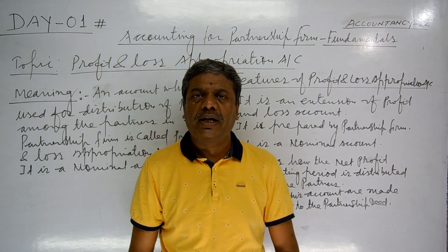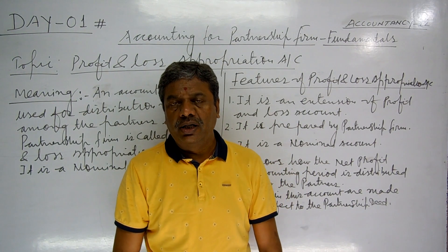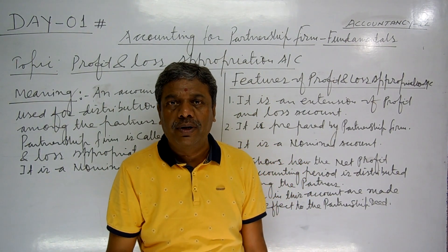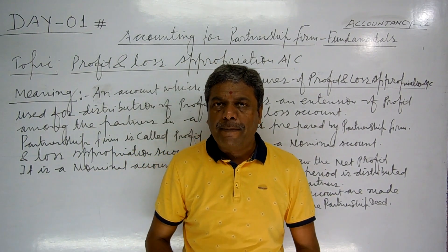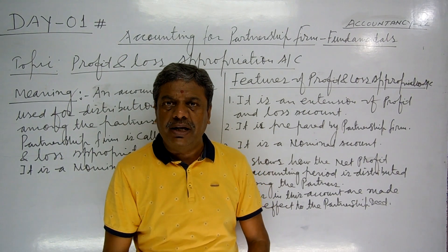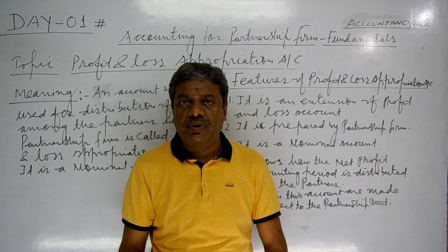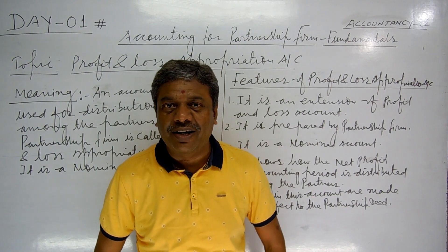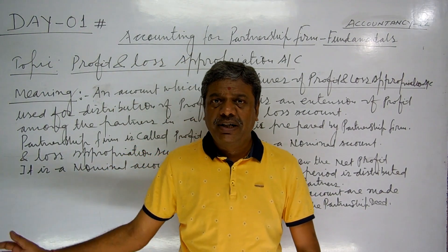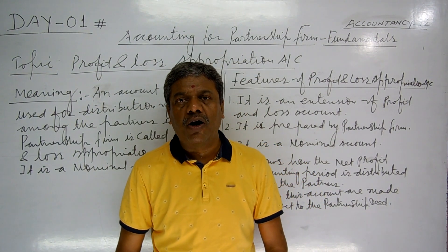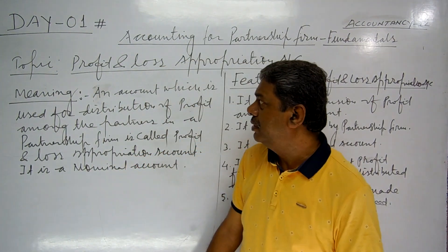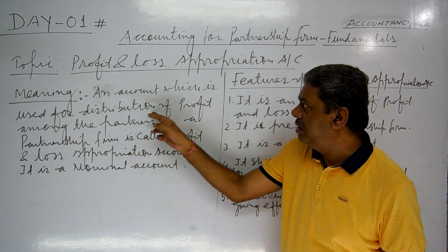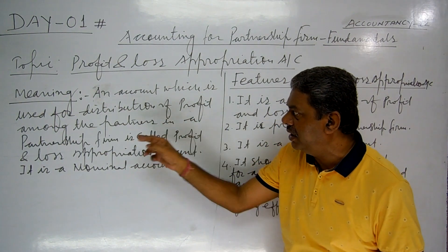My dear students, we have our Profit and Loss Account. The Profit and Loss Appropriation Account is the extension of the Profit and Loss Account. When somebody asks you what does Profit and Loss Appropriation Account mean, you will give the answer: it is the extension of the Profit and Loss Account. I have written the meaning of Profit and Loss Appropriation Account.